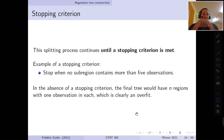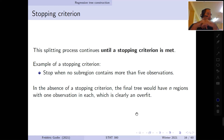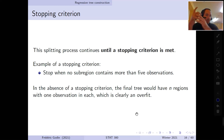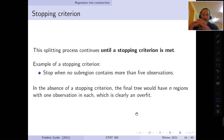A suitable stopping criterion can take various forms. A common example is to stop whenever a region contains no more than five observations. If a sub-region contains one, two, three, or four observations, we won't split it anymore.